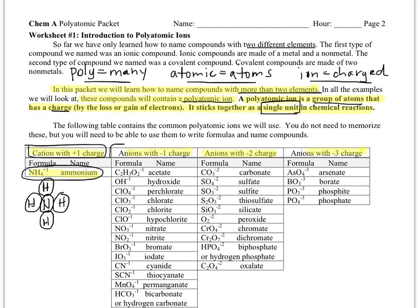All the other columns of this table are anions. The first column of anions, they all have a minus one charge. The second column, they all have a minus two. And the third column, they all have a minus three.